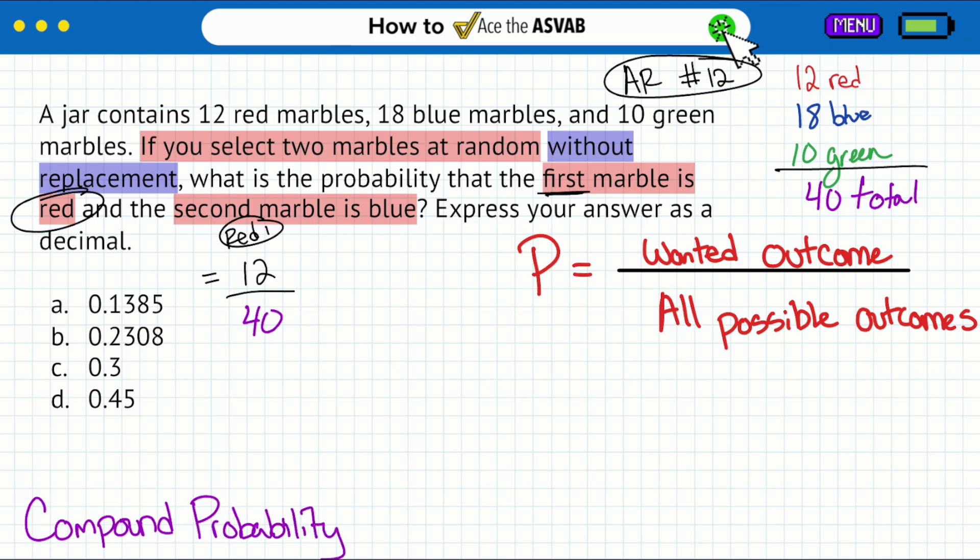But then they say, if we're not replacing it, what's the probability of getting the first and the second? This is now not just simple probability. This is what's called compound probability. How does compound probability work? You're just going to multiply the probabilities. The way that you know you're dealing with compound probability is that you have one thing happen and then another thing happen. What you do with compound probability is you multiply the probabilities.